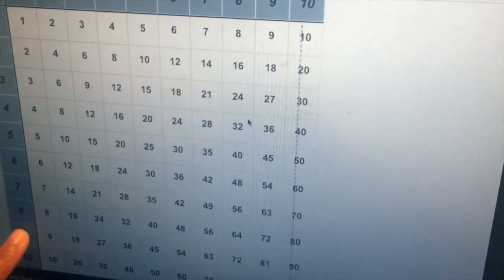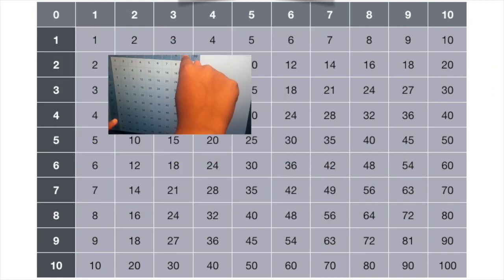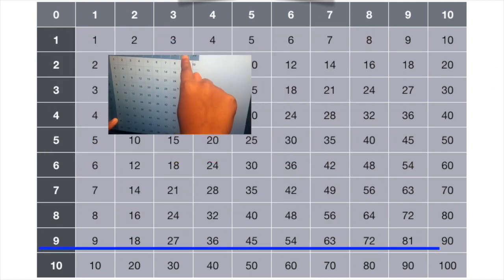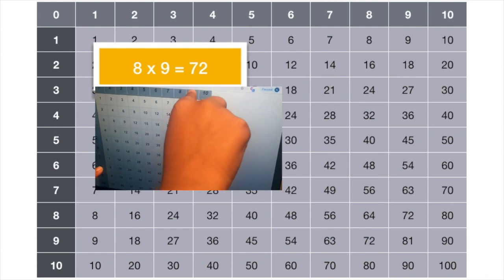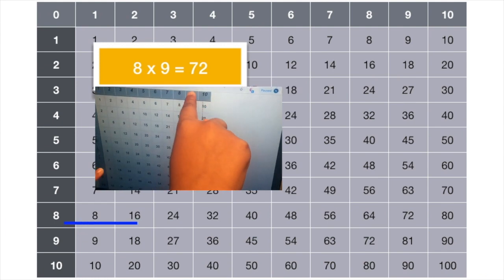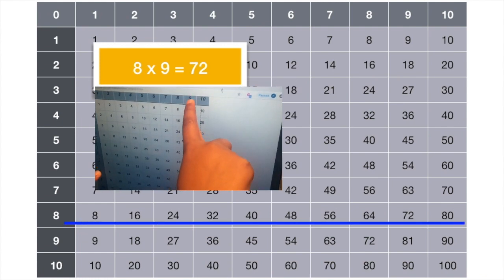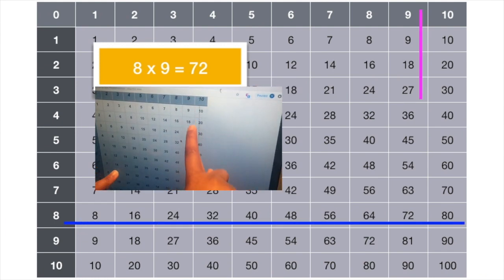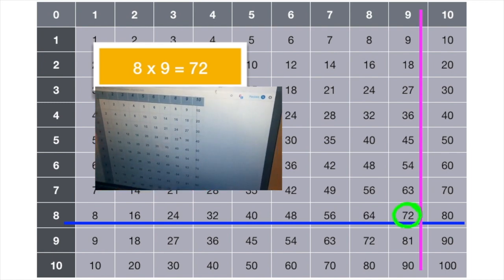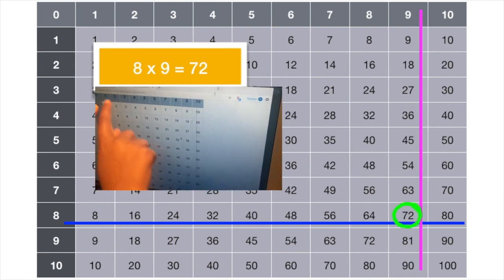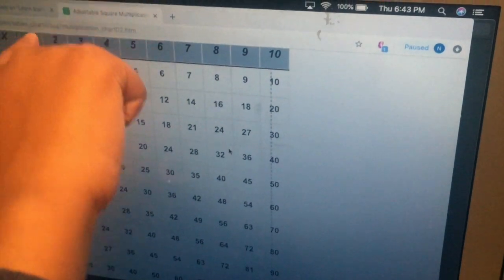9 times 9. Coming down. 81! Now, 8 times 9. Come down. 72! So, 1 times 1. 1.